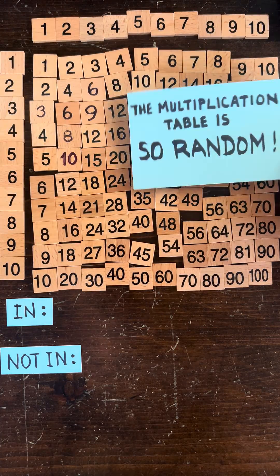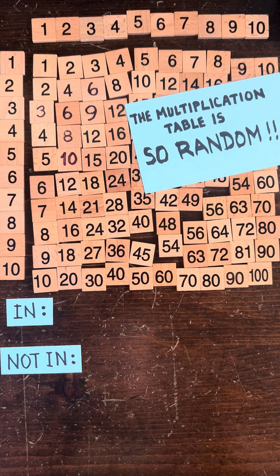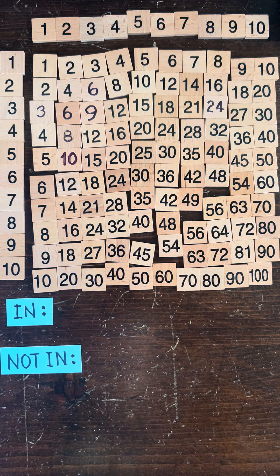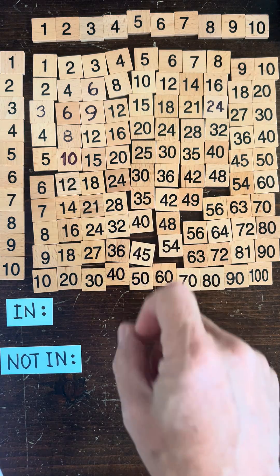Kids look at the multiplication table and they're like it's so random. Adults look at it and say no it's very orderly and clean, but the kids are right. Mathematicians will tell you there's a lot we don't know about the multiplication table.